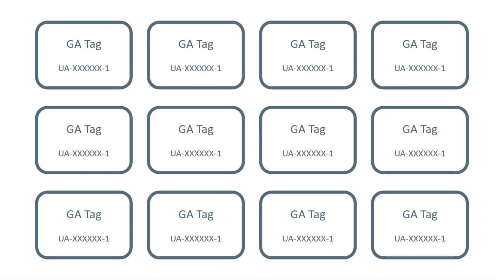Imagine a situation where you or your client decides to move from one Google Analytics property to another. If you have configured the Google Analytics property ID on each tag individually, you will need to go one by one and update all those tags to change the tracking ID. This increases the possibility of human error — some tags may still use the old ID — and it is also just a waste of time.